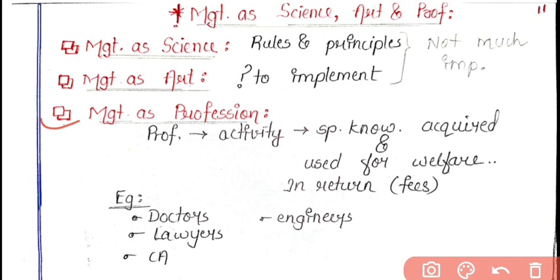Management is a science, it is an art, and it is also a profession. In science there are several rules and principles — various scientists have given various laws, for example the law of gravitation: anything thrown up will come down towards the earth. In the same way, there are various rules and regulations in management also. This similarity between science and management is why management is termed as a science.